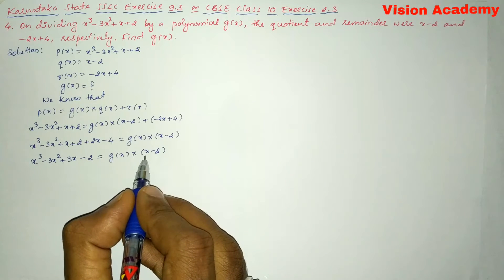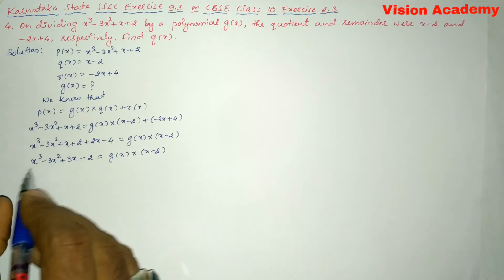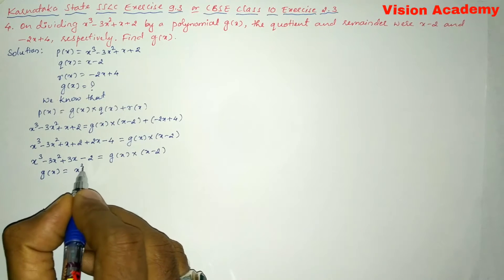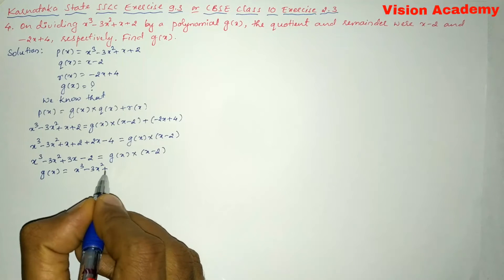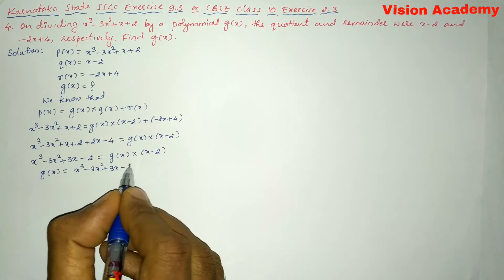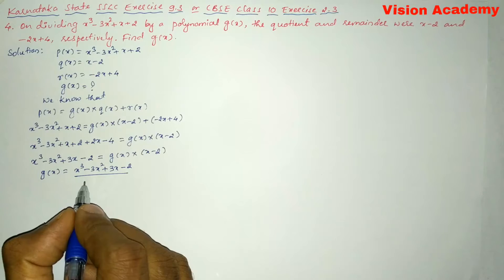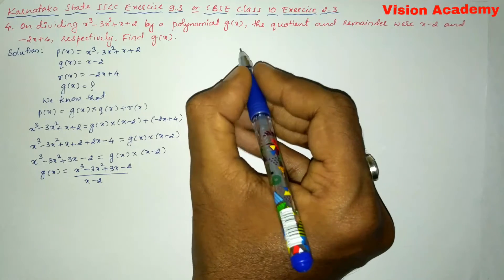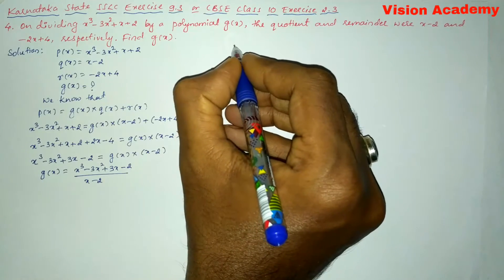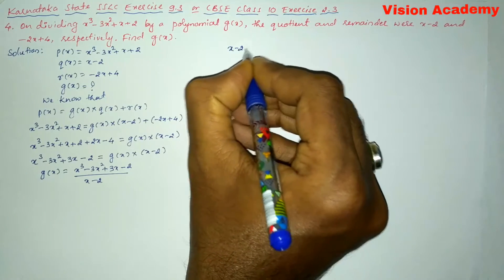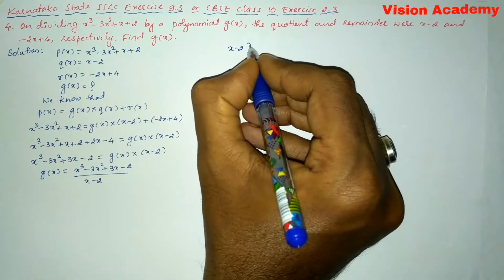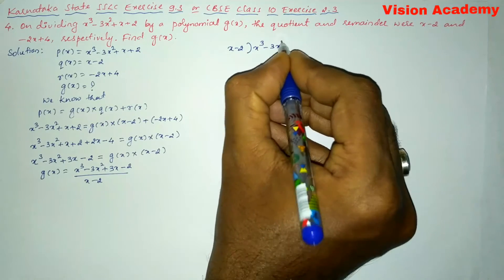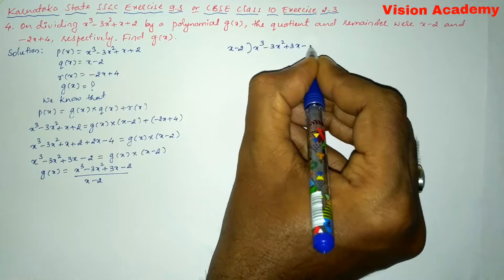Now let us transform x minus 2 from the RHS to the LHS. This gives us g(x) is equal to x³ minus 3x² plus 3x minus 2 divided by x minus 2. Now let us divide this polynomial by x minus 2, so x minus 2 divides x³ minus 3x² plus 3x minus 2.